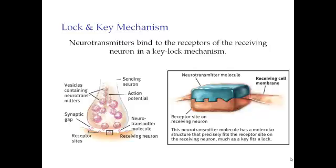If you look here, it kind of looks like a lock and a key. The receiving neuron receives the neurotransmitter. Once the neurotransmitter bonds with the receptor, it will trigger the message that is going to be sent — telling the next cell what to do. The neurotransmitter bonds with the receptor essentially like a lock and a key binding.